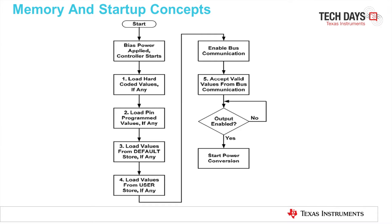What are the memory and startup concepts for PMBus? This is a flow chart of a PMBus power supply IC. First, the bias power supply is applied and the controller starts. Then we load the hard-coded value, if any. Then we load the pin-programmed value, if any. Then we load the value from the default store in the IC, if any. Then we load the values from the user store, if any. Afterwards, the bus communication is enabled, and the IC will start accepting valid values from the bus communication. If the output is enabled, the IC will start the power conversion.